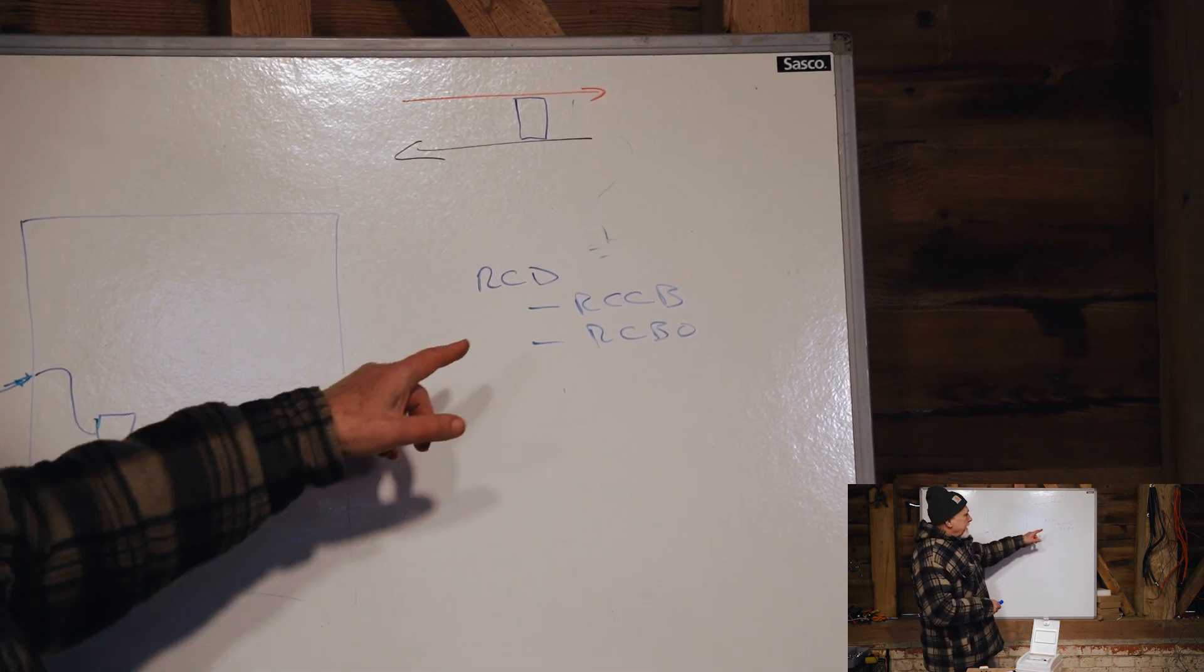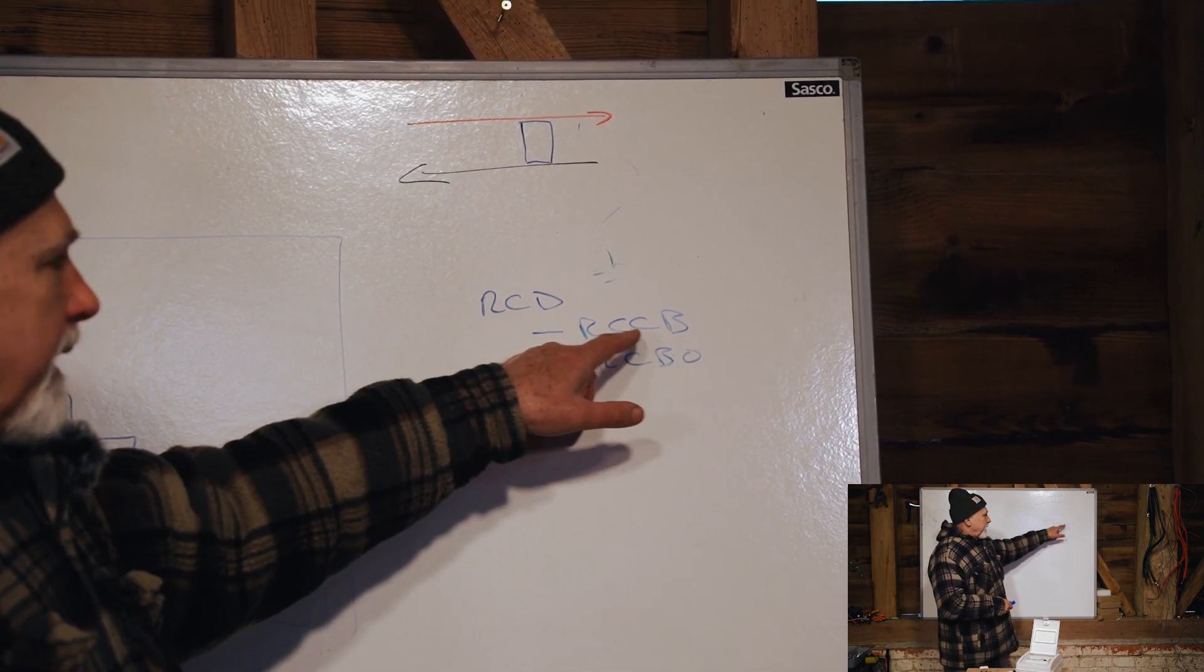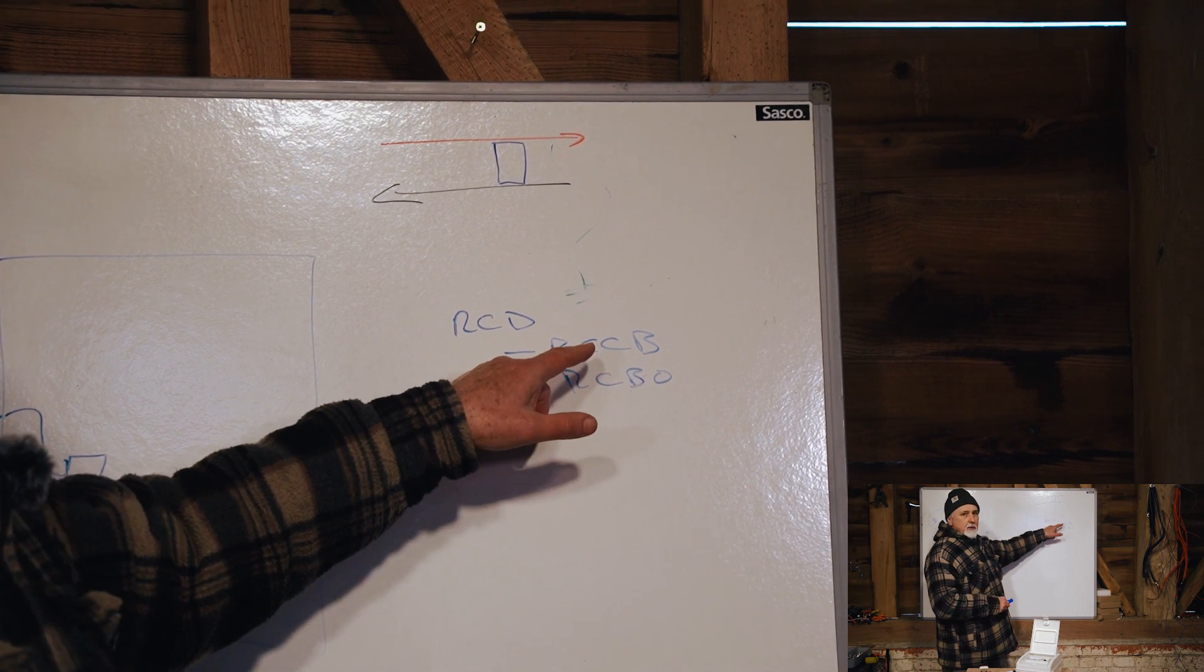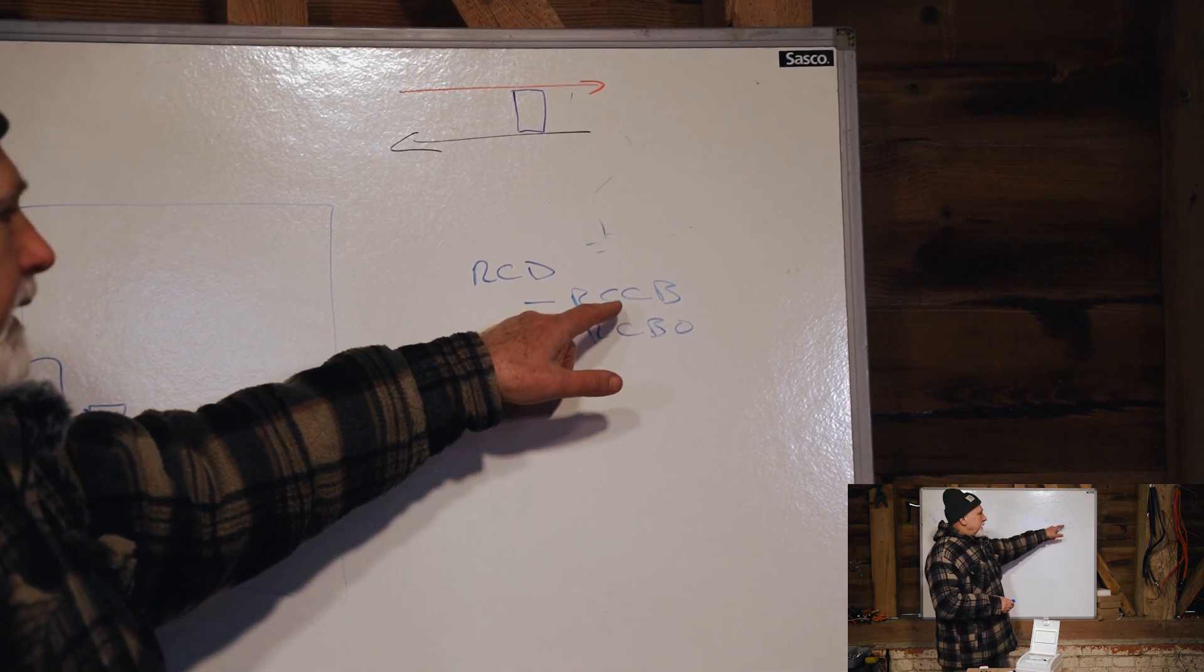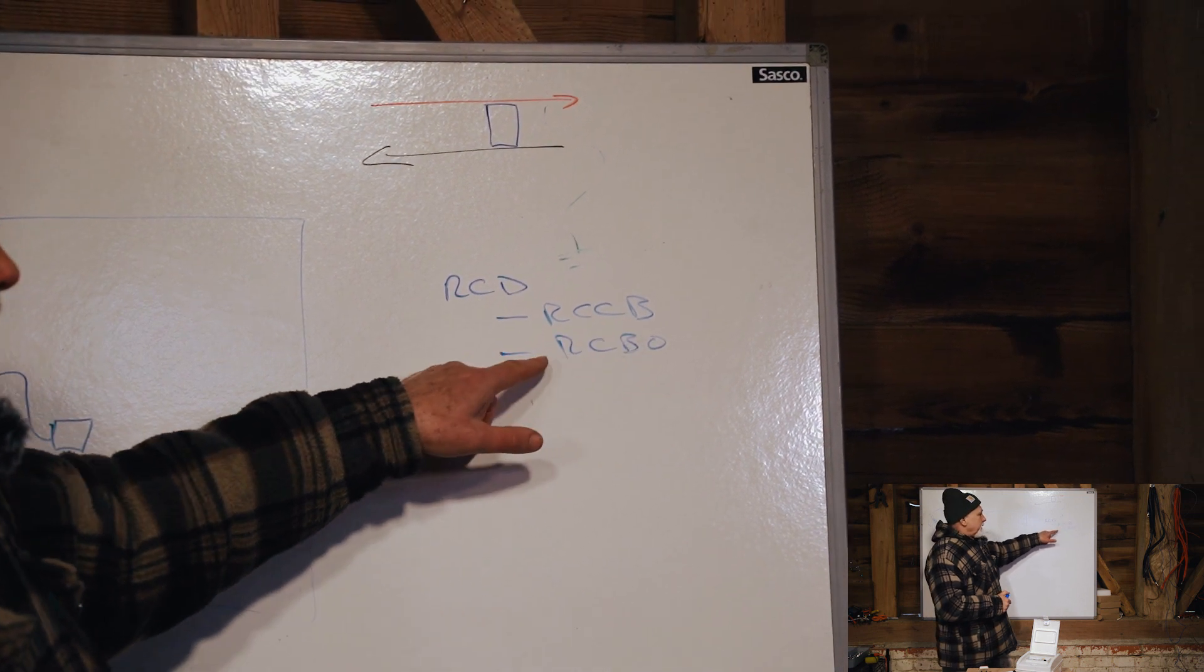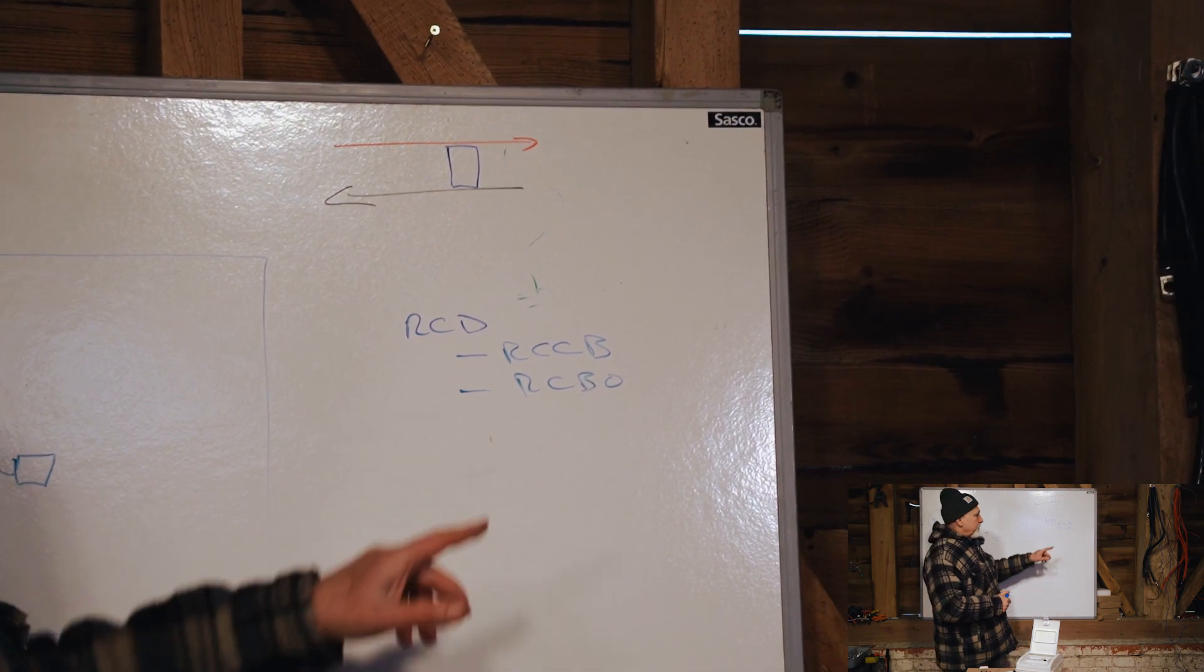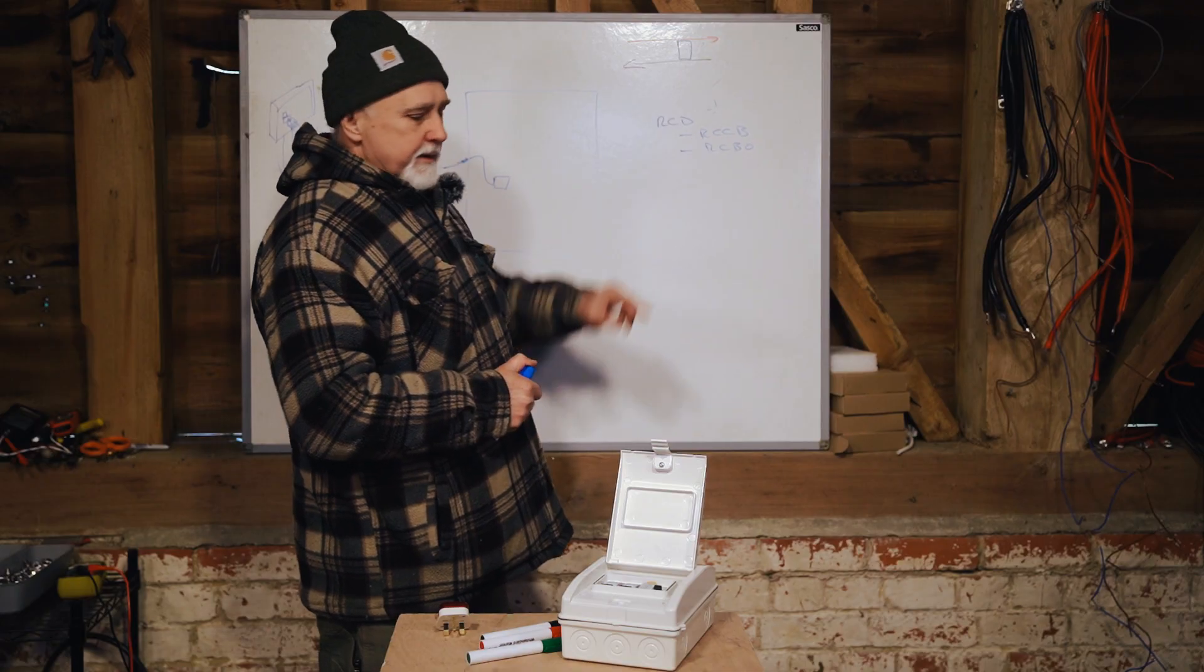So basically, if you're using an RCD or an RCCB, which are sort of the same thing in most people's minds, you also need to have a circuit breaker as well. If you're using an RCBO, you don't need an additional circuit breaker because this does it all for you. So this does a lot more than this.